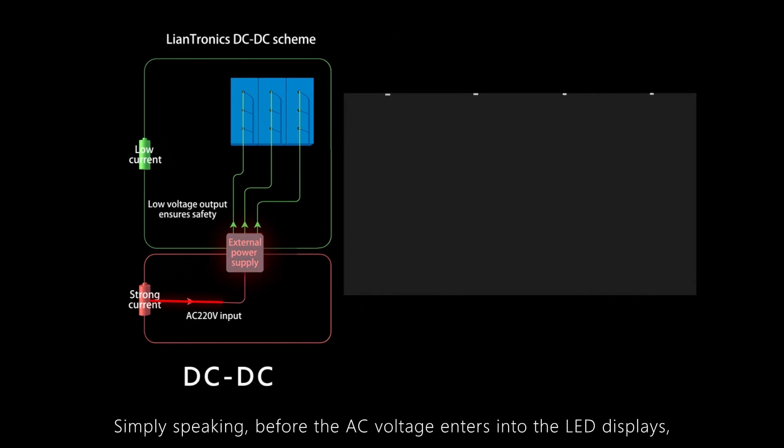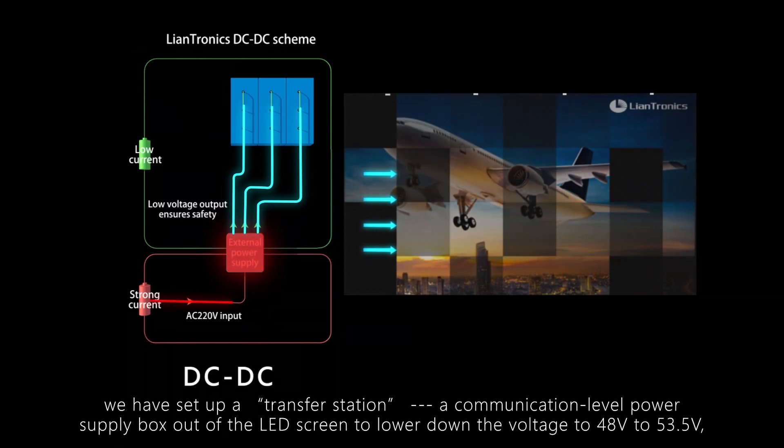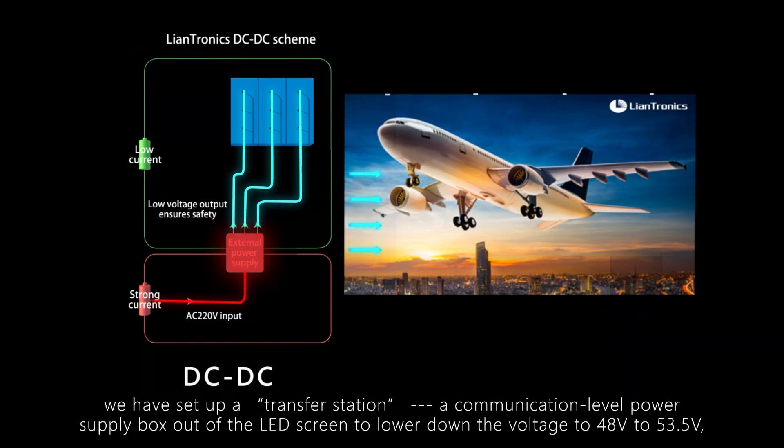Simply speaking, before the AC voltage enters into the LED displays, we have set up a transfer station, a communication-level power supply box out of the LED screen to lower down the voltage to 48V to 53.5V.